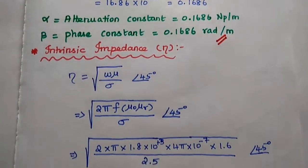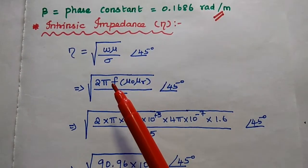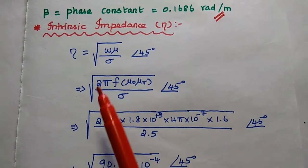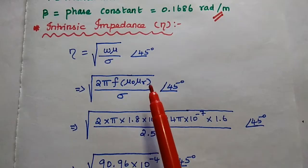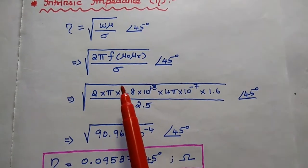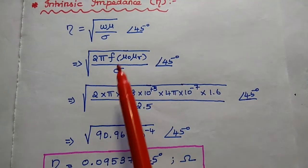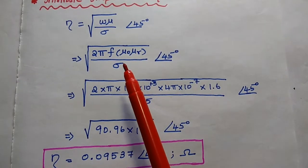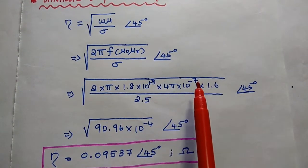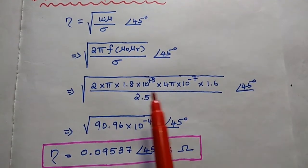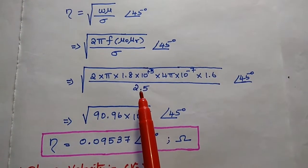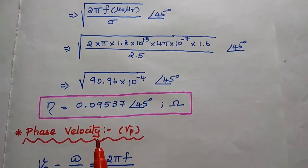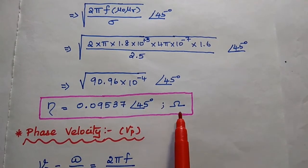Next, the intrinsic impedance: eta equals square root of omega mu by sigma, with angle 45 degrees. Substituting omega equal to 2 pi f, mu equal to mu naught times mu r, we get square root of 2 pi into 1.8 into 10 to the power 3 into 4 pi into 10 to the power minus 7 into 1.6, divided by 2.5. The answer is 0.09537 ohm at 45 degrees.